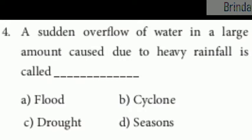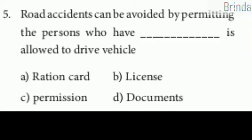Fifth question: road accidents can be avoided by permitting persons who have dash to drive a vehicle. Your options are ration card, license, permission, documents. The answer is license, because only those who have completed training and obtained a driving license are allowed to drive.